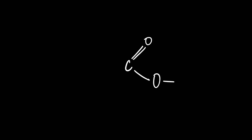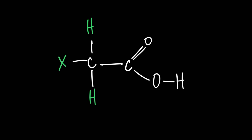In general, a carboxylic acid has atoms attached to it, and what we want to discuss is how something attached to an acid affects its acidity. Specifically, we're looking at how alkyl groups, electronegative elements like chlorine, bromine, and iodine have an effect on the acidic nature of a carboxylic acid. To understand that, we first need to understand why carboxylic acids are acidic in the first place — why do they ionize?